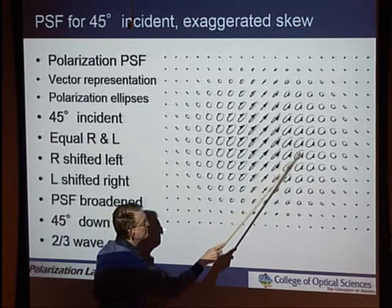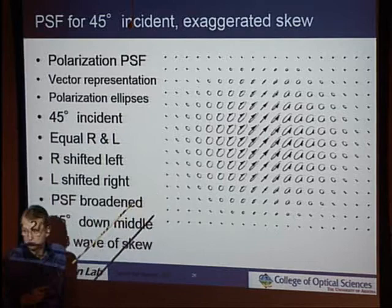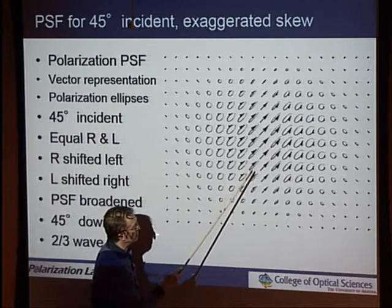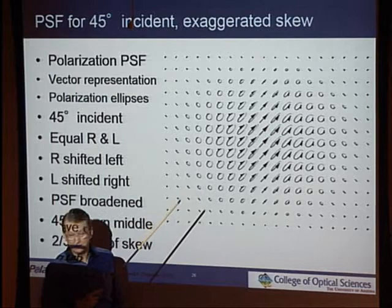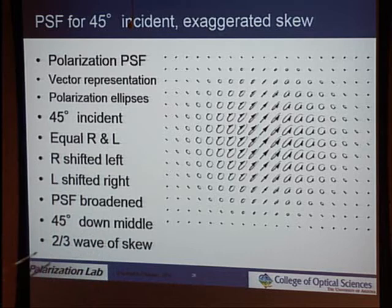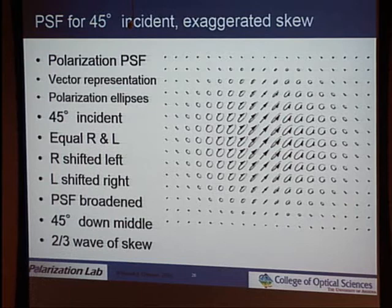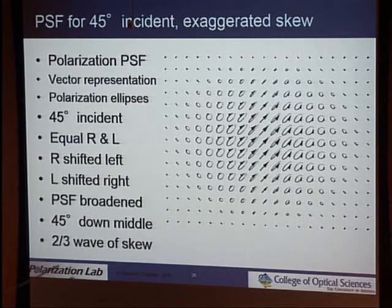With 45-degree polarized light, the point spread function can be represented with polarization ellipses: right down the middle of the PSF we have 45-degree polarized light, but to one side it becomes increasingly elliptical, and on the other side the opposite ellipticity. The right circularly polarized light is shifted to one side; the left circular is shifted to the other. Coherently combining them gives a broadened point spread function — this example uses two-thirds of a wave of skew aberration, which is enormous, just to make the effect visible.